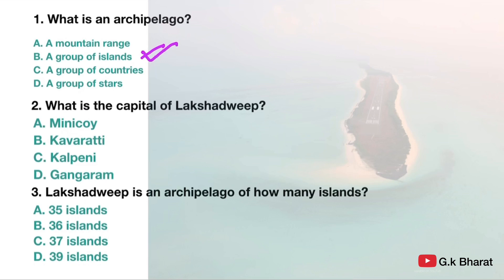Next. What is the capital of Lakshadweep? Option A: Minikoi. Option B: Kabaratri. Option C: Kalpani. Option D: Gangragram. Your correct answer is option B — Kabaratri.